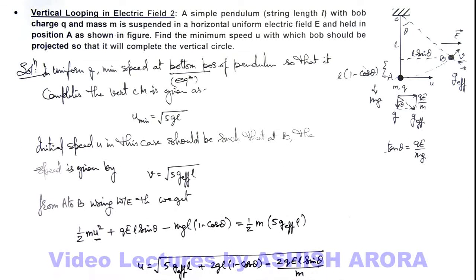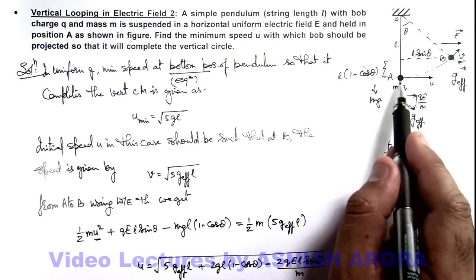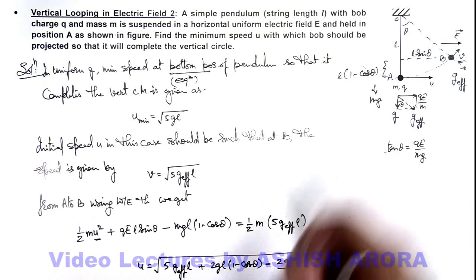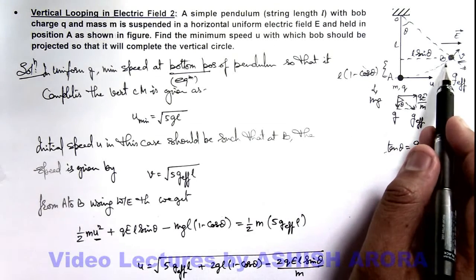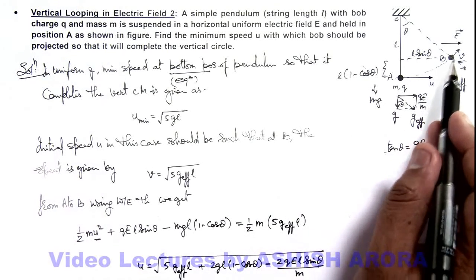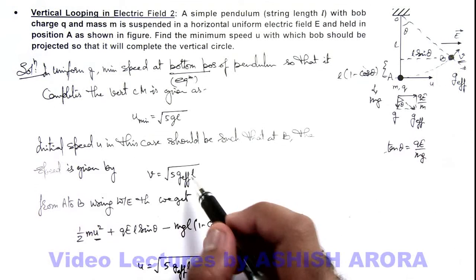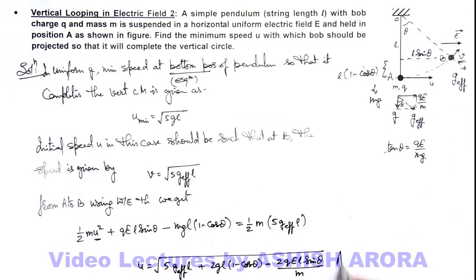So this is the speed with which if we project the bob in horizontal direction from point A, at point B which is the equilibrium position of this case, the bob will be reaching with the speed root 5 g effective l so it'll complete the vertical circular motion. This is the result of this situation.